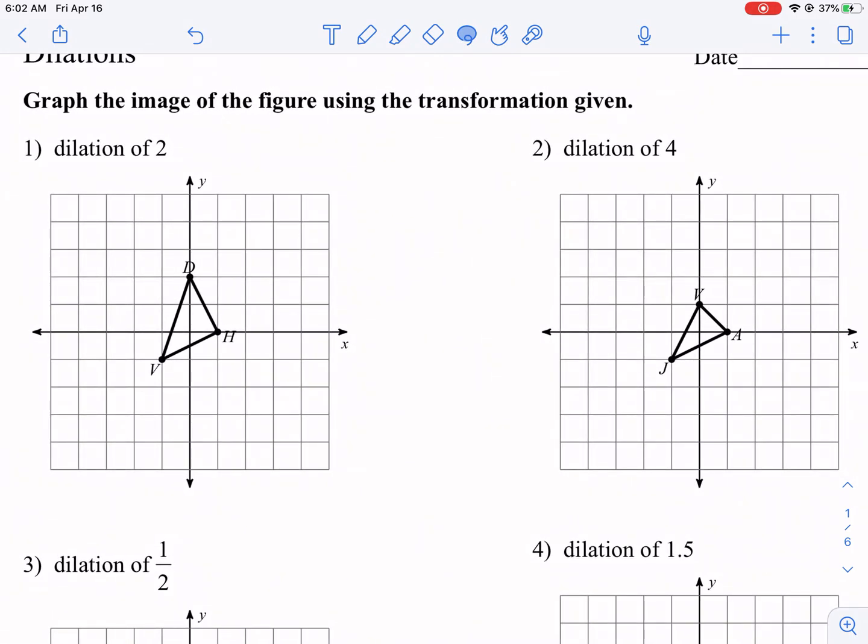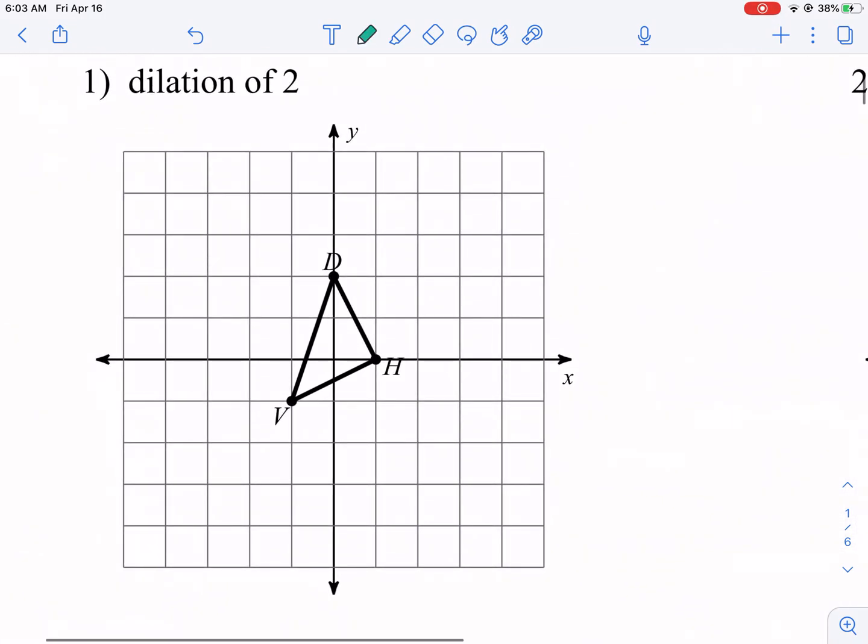So dilations are fairly simple. The main thing we need to do with dilations is figure out the current coordinates. As we look at number one, we see that D is situated at 0, 2, H is at 1, 0, and then V is at negative 1, negative 1. Now, what we're doing here is we're dilating it by 2, dilation of 2. Now, what does that mean?